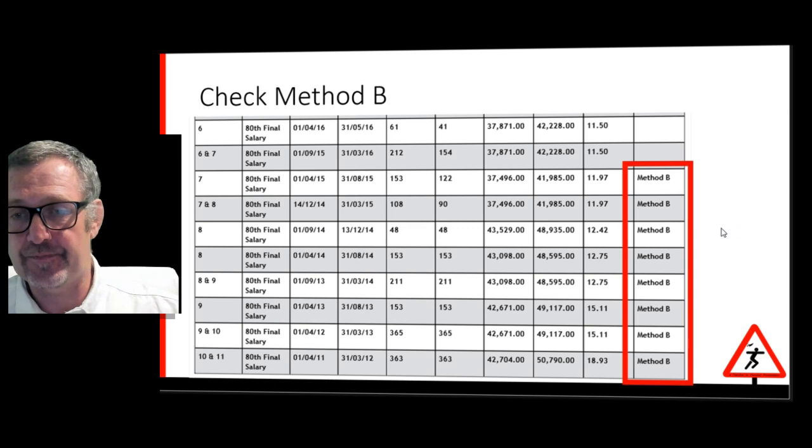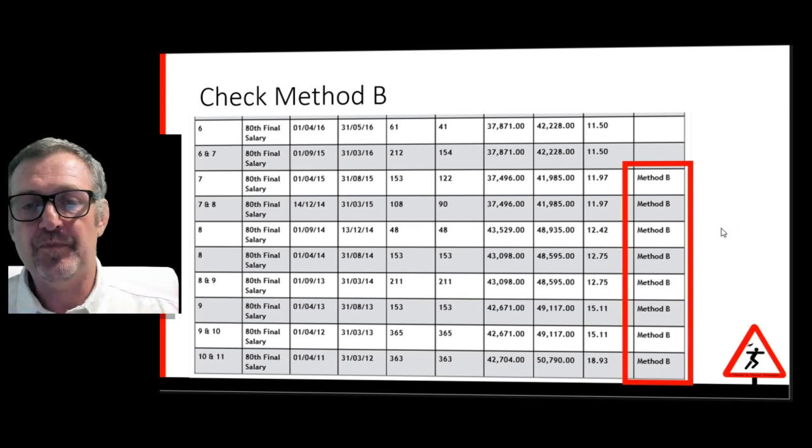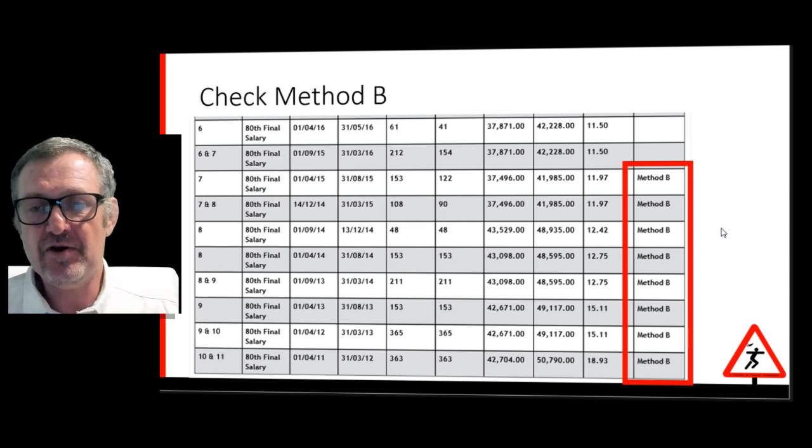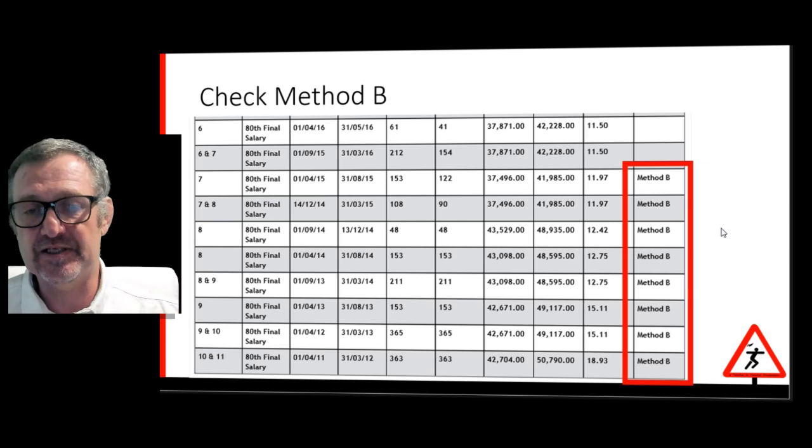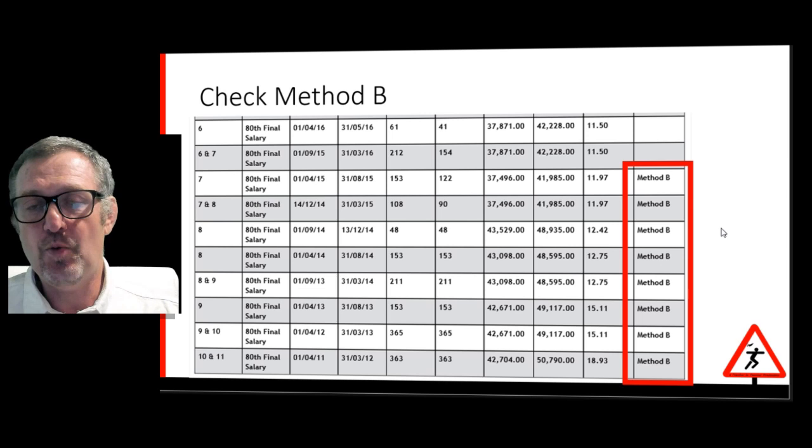So to remind you what you need to look for: on your statement, if your Method B is using the salaries from the bottom of this table, take a closer look at whether you need to take a month out to prevent your final salary from dropping.